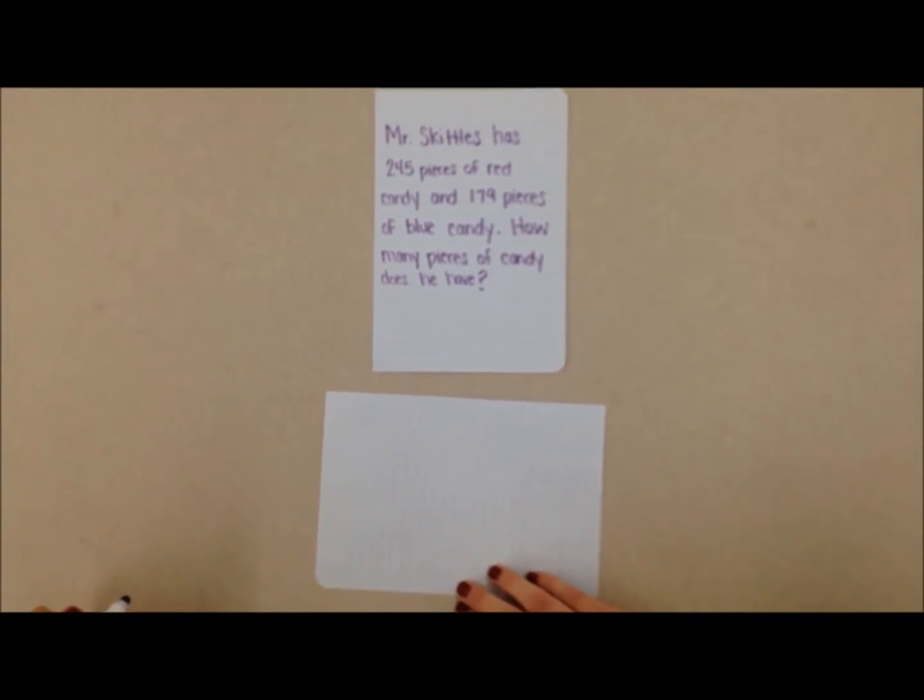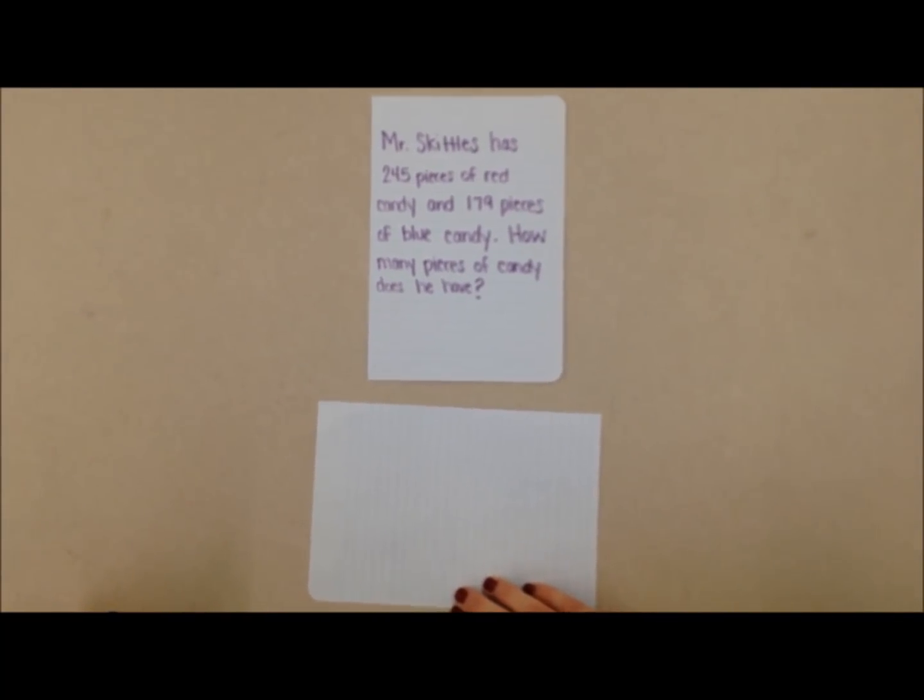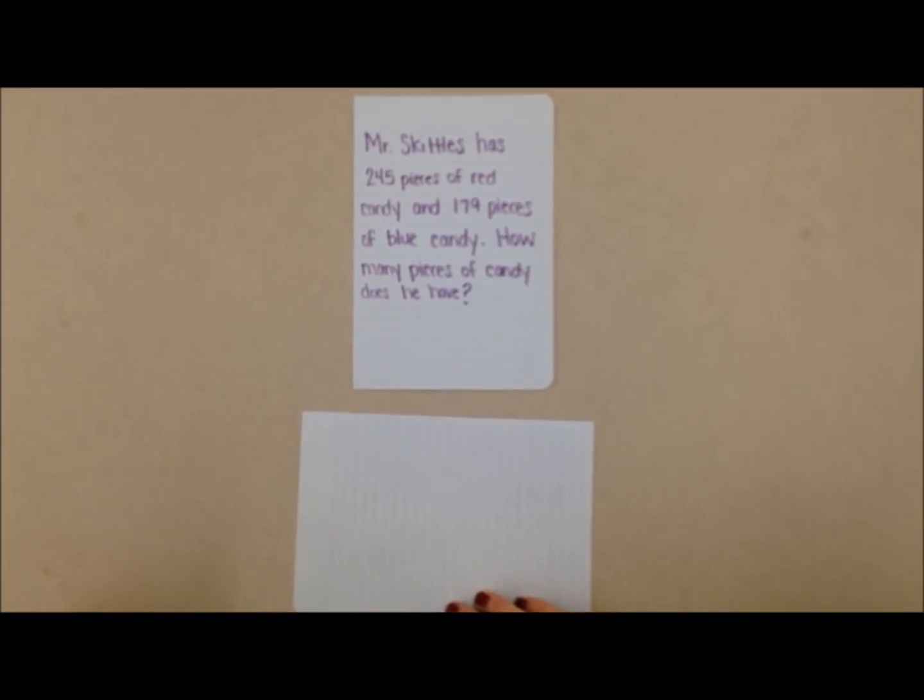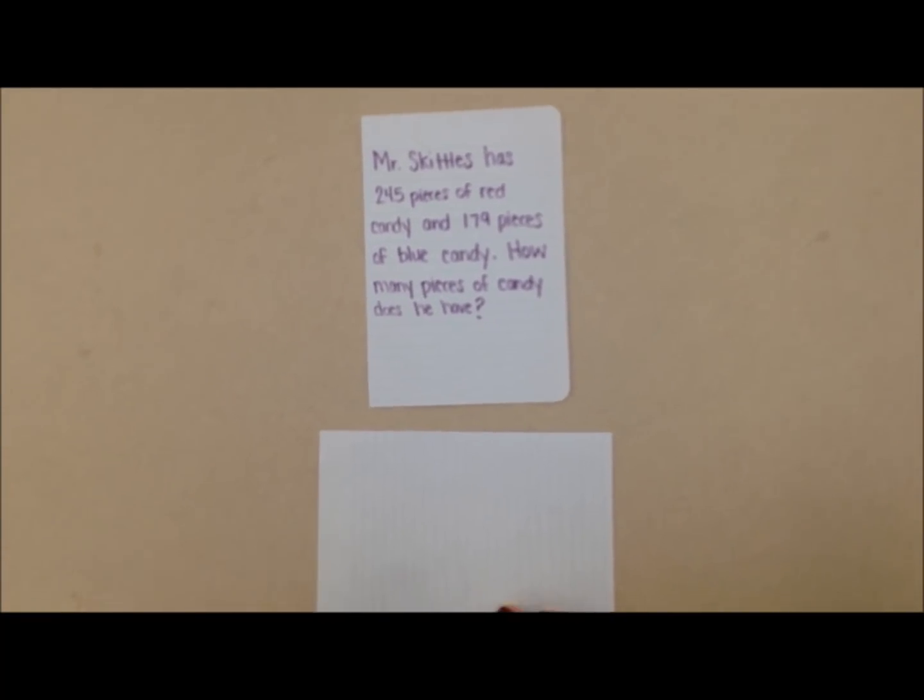Mr. Skittles has 245 pieces of red candy and 179 pieces of blue candy. How many pieces of candy does he have? Okay, so we're going to be combining.